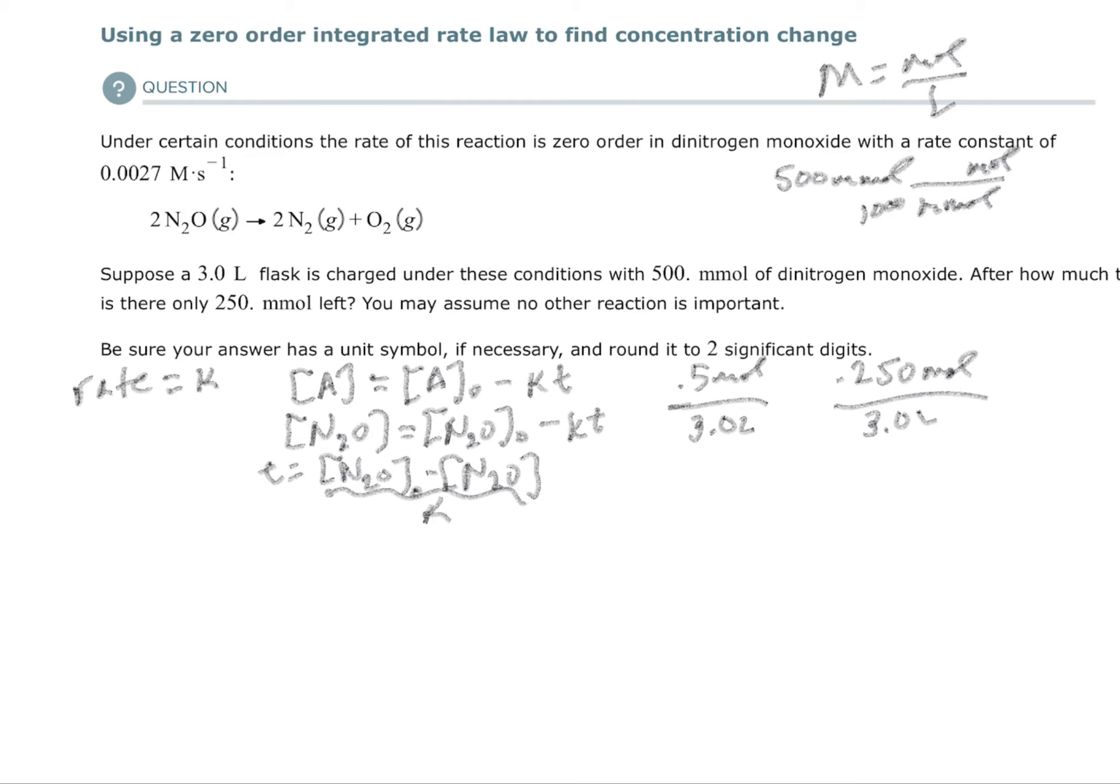So I'm going to get T equals, I'll put this in parentheses, 0.01666667, so let's just round it to 67 molarity, minus my new one which is going to be 0.083333, I'll do maybe three of them.